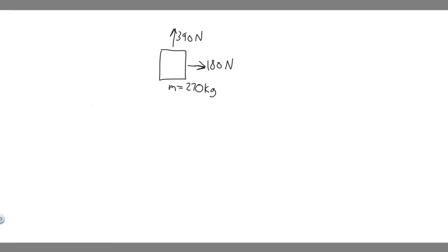In this problem, we're told the force exerted by the wind on the sails of a sailboat is 390 newtons north. The water exerts a force of 180 newtons east. If the boat, including its crew, has a mass of 270 kilograms, what are the magnitude and direction of its acceleration?